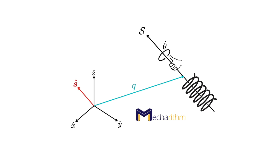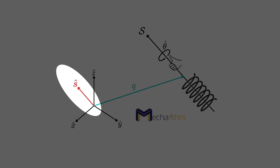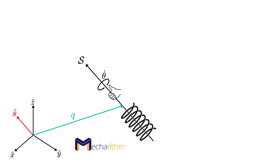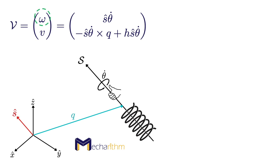First, the screw axis can be represented by any point on the axis q, the unit vector in the direction of the screw axis ŝ, and the screw pitch h, which is the linear speed along the screw axis divided by the angular speed about the screw axis. This can be written in compact form as q, ŝ, and h. The twist about the screw axis represented by q, ŝ, and h can be defined using this equation. Omega is the angular velocity in the direction of the unit vector ŝ with the magnitude theta-dot.